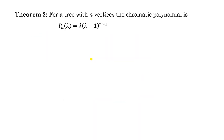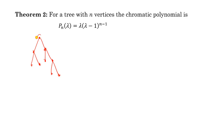For a tree with n vertices, the chromatic polynomial is P(n, lambda) = lambda times (lambda minus 1) raised to the power n minus 1. Consider an example of a tree with a root node.